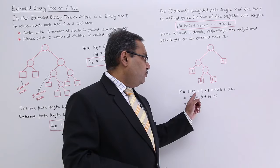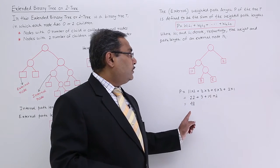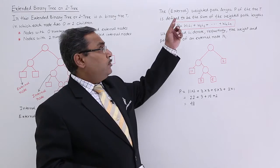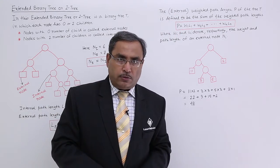Now what will happen: 2 into 11, 3 into 3, 3 into 5, and 1 into 2. So if you go on doing you are getting 48 and this 48 is known as weighted path length and here it will be calculated always for the external nodes.